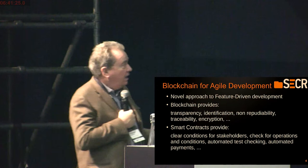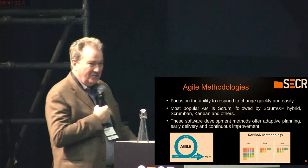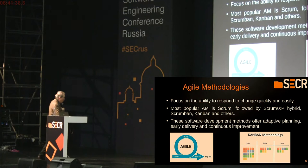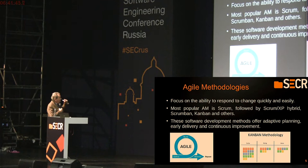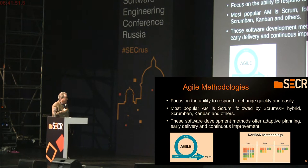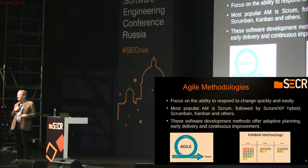The agile methodologies are very useful today. The most popular is Scrum, then there is a Scrum-XP hybrid, Scrumban, Kanban, and others. They offer adaptive planning, early delivery, and continuous improvement. One of the main reasons is that the development is incremental and is driven by user stories. You can see here the user stories in a Kanban board, and in the iteration the stories are implemented — a subset of stories is implemented each time.